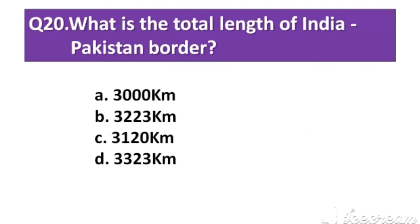Question number 20: What is the total length of the India-Pakistan border? Option A: 3000 km. Option B: 3223 km. Option C: 3120 km. Option D: 3323 km.